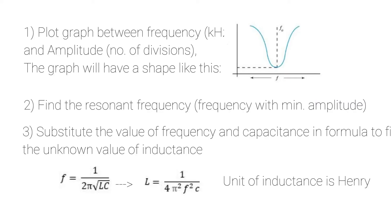The original formula is f equals 1 over 2π√LC. Then you will rearrange the formula for the inductance, L equals 1 over 4π²f²C. By putting the value of resonant frequency f and capacitance, you can find the inductance, and its unit will be in Henry.